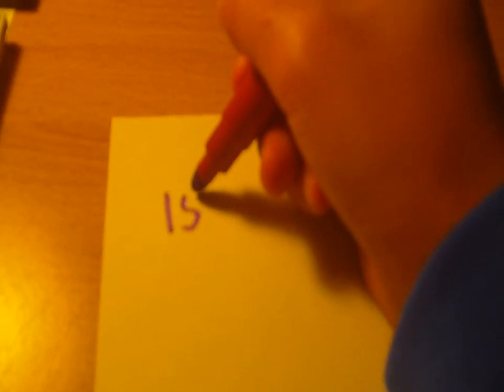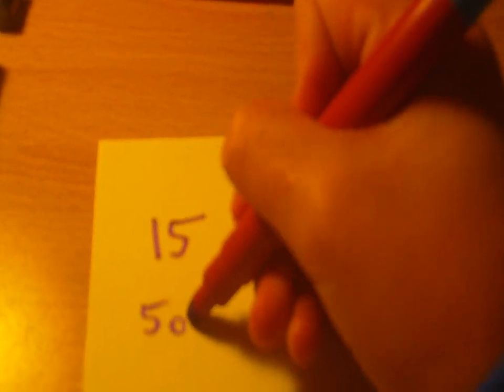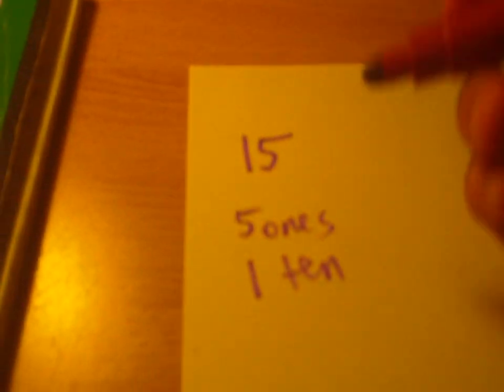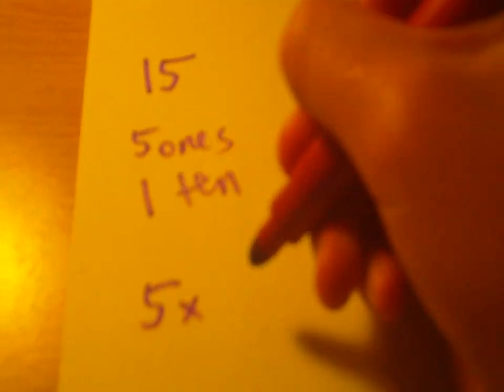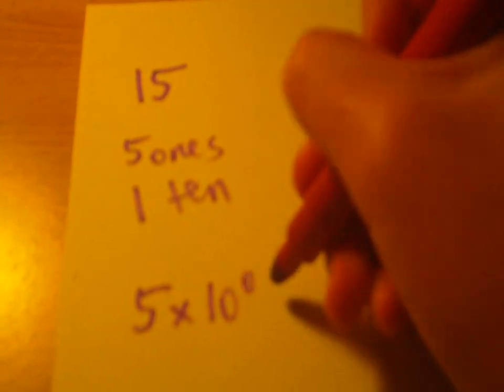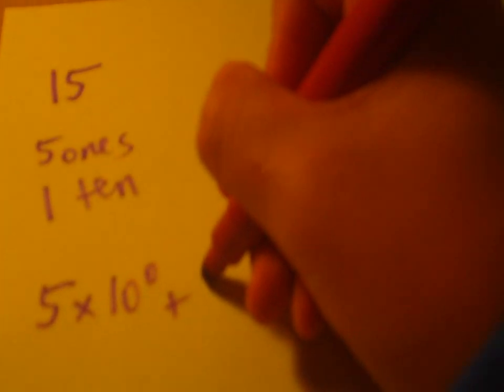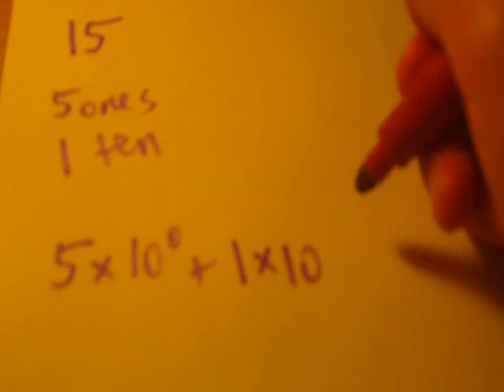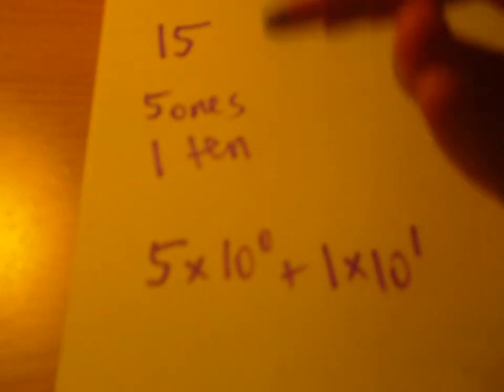we are in base 10. So, if you wrote the number 15, 15 means 5 ones and 1 ten, correct? But it can also be written as 5 times 10 to the 0th plus 1 times 10 to the 1st, which adds up to 15.